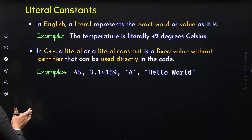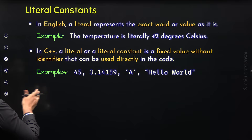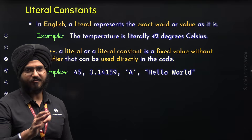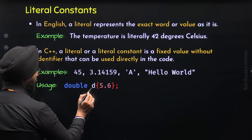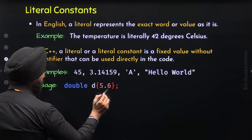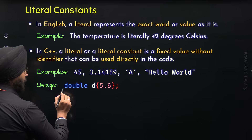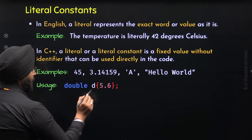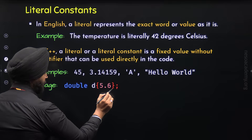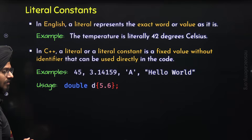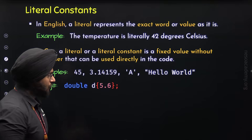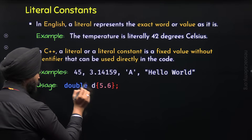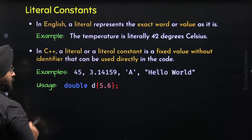Now let's see some use cases of literals in C++. The first use case is we can use a literal to initialize a variable. For example, here I have initialized a variable D of type double with the value 5.6. I have provided this value within braces using list initialization, which is the best practice. So 5.6 is the floating point literal used to initialize this variable.